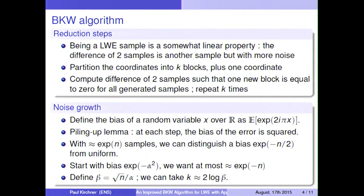Here is a precise analysis. We can define the bias of a random variable X over R as this. And then we know that the piling up lemma, which is at each step the bias of the error is squared. And so because our running time will be close to exponential, we know that we can distinguish bias which is only almost exponentially small.